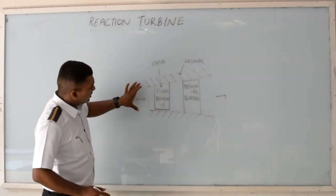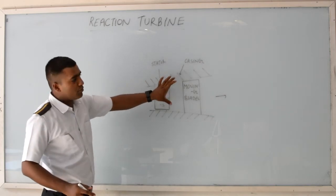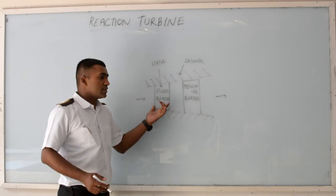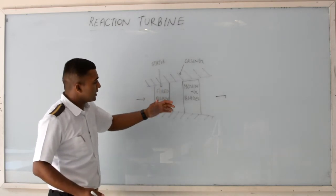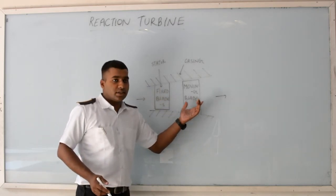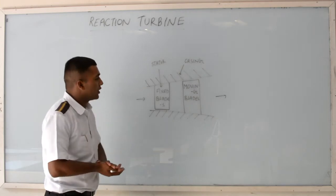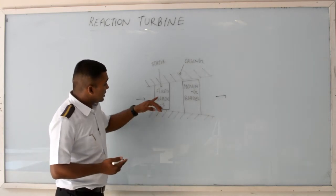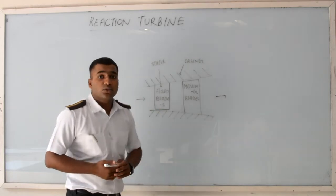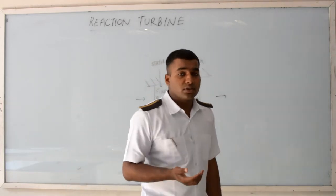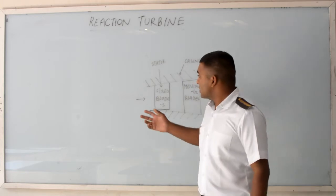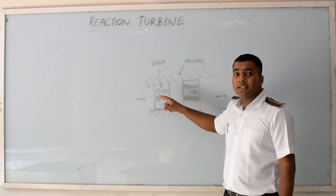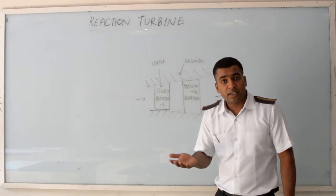I will now explain the Reaction Turbine with the help of a diagram. This is a cross-section of the Reaction Turbine. These are the stationary fixed blades fitted on the stationary casing, and these are the moving blades fitted on the rotor. These stationary blades are acting as nozzles — the velocity of steam passing through the stationary blades will increase.